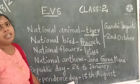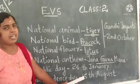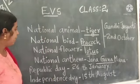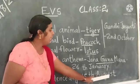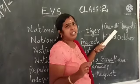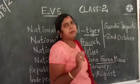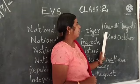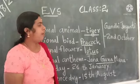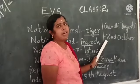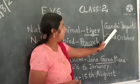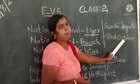We celebrate our Independence Day on 15th August. Next is Gandhi Jayanti. Gandhi Jayanti is the birthday of our Mahatma Gandhi, the father of our nation. We celebrate Gandhi Jayanti on 2nd October.